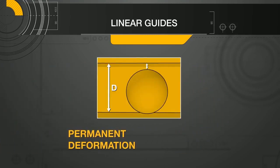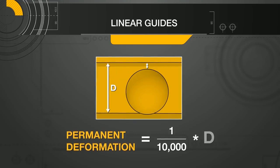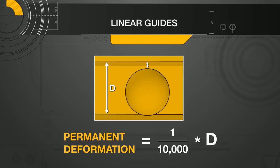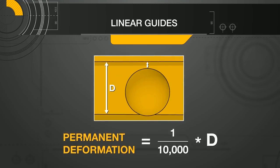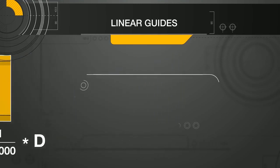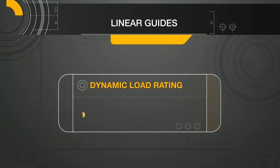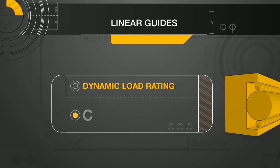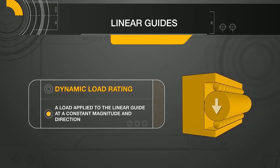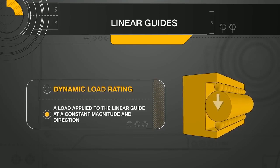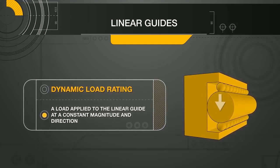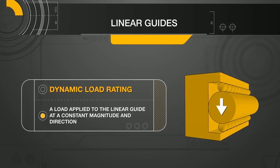It is defined as permanent deformation equal to one ten-thousandth of the rolling element diameter and is based on the materials used and the stress distribution on the ball or roller. The second load rating is the basic dynamic load rating, denoted as C. It is a load applied to the linear guide at a constant magnitude and direction at which the nominal life of the linear guide is expected to be a fixed given travel distance.